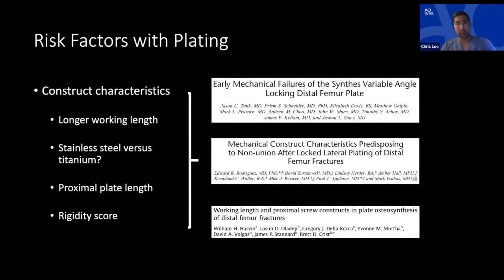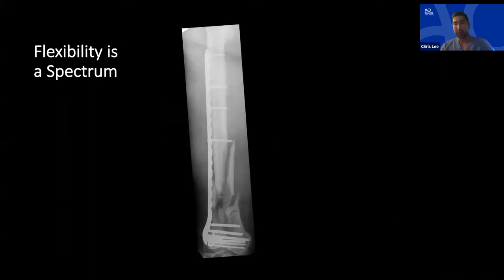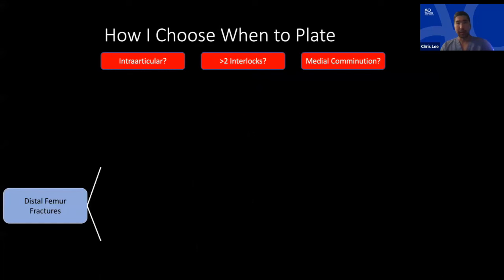What construct characteristics can you control? Working length, plate metallurgy, proximal plate length, and overall rigidity through screw density. Optimal working length isn't universally defined — in training people said four or five holes but it varies per fracture. Proximal plate length data suggests at least eight holes proximal to the fracture is better. Flexibility is a spectrum: with a large zone of medial comminution you want accordion-type motion but what you actually get is cantilever bending with far more medial than lateral flexibility, causing shearing problems.